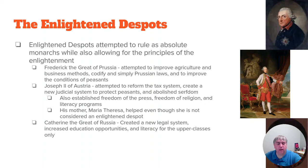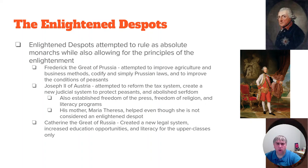In Russia, the Enlightened Despot was Catherine the Great. She created a new legal system that was more fair for the middle and upper class, opened schools for women and girls of the middle and upper class, and generally increased education and literacy opportunities for the upper class. However, if you were lower class in Russia, Catherine the Great really didn't care too much about you. Her reforms largely benefited the middle and upper classes.